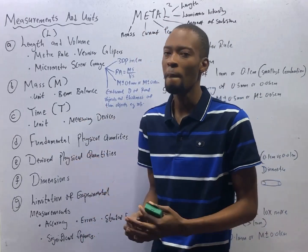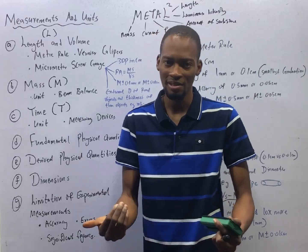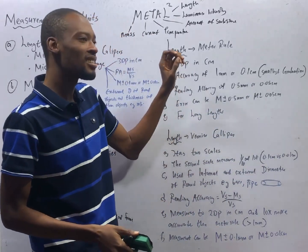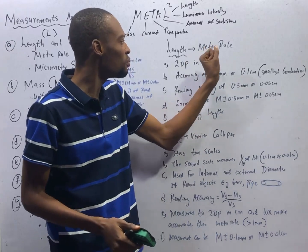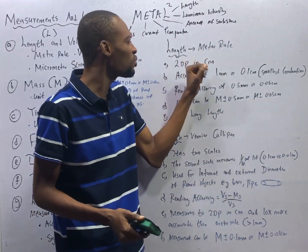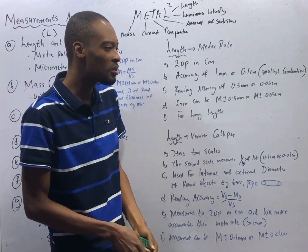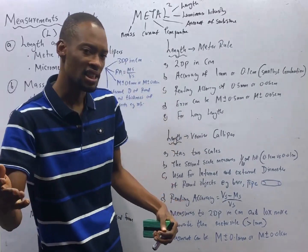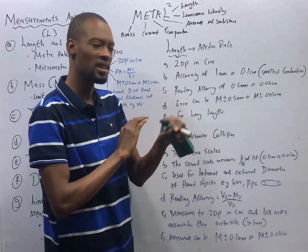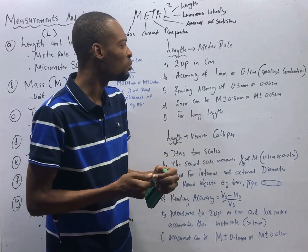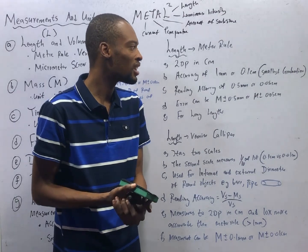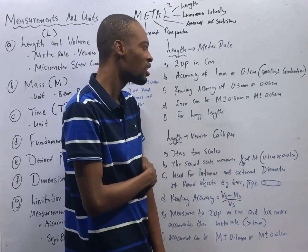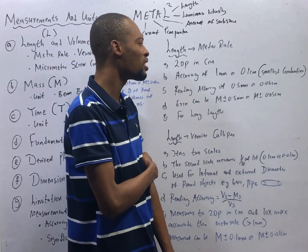What is a meter rule? What is a vernier caliper? And what is a micrometer screw gauge? A meter rule is an instrument or device used to measure length. It measures to two decimal places in centimeter, which means you can only have 0.01 centimeter precision. The accuracy of a meter rule is 1 millimeter or 0.1 centimeter — that is the smallest gradation. The reading accuracy is 0.5 millimeter or 0.05 centimeter.